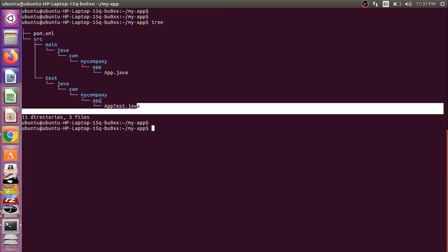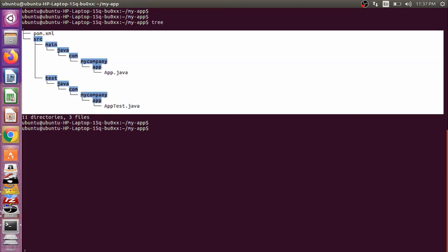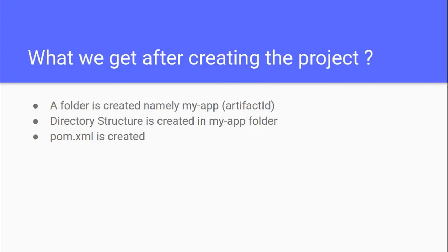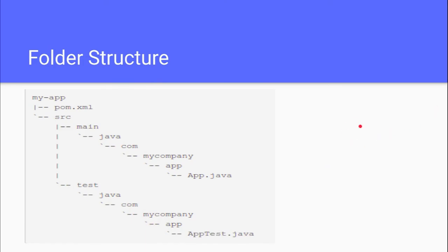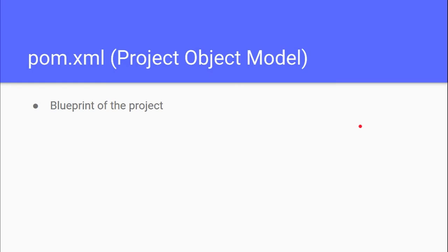I have also attached a picture of this directory structure in the PPT — you can download it from the description. Let's move ahead now and see what pom.xml is. Pom.xml is the blueprint of the project. All the external jars that we use and all the plugins that we use are defined in this particular file.